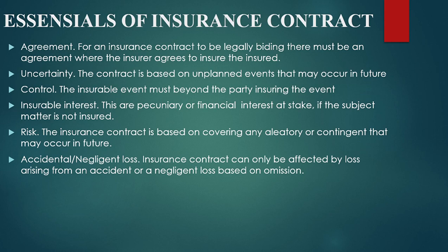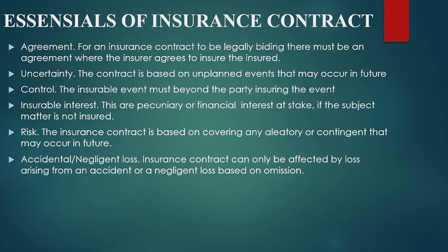Some of the essential elements of an insurance contract. First is agreement: for an insurance contract to be legally binding, there must be a legal agreement between the insurer and insured. Second is uncertainty: the contract is based on an unplanned event that may occur in future. Third is control: the insurable event must be one that the insurer has the capability to cater for — covering any damage or risk which may occur to the insured.